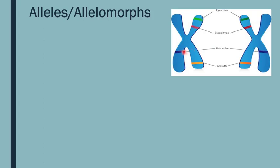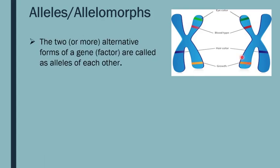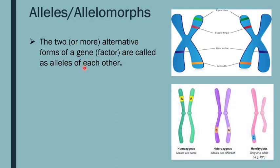There are two or more alternative forms of a gene — called alleles of each other. In this example we see two forms: one from father, one from mother, on homologous chromosomes. Multiple alleles will be covered in future videos.